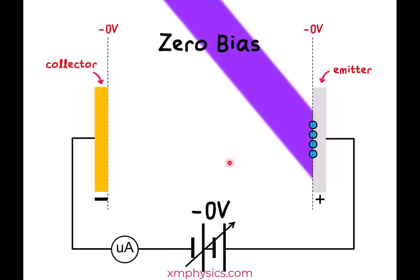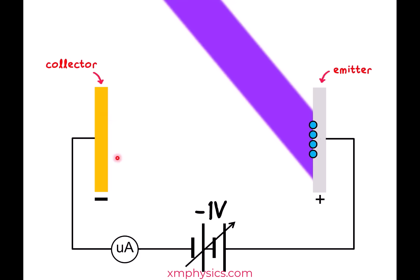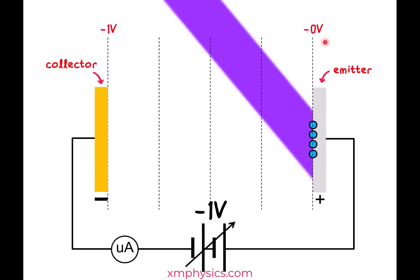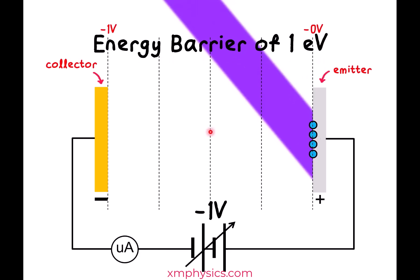Let's go back to the photoelectric effect. At zero bias, the photoelectrons are emitted with a range of initial KE — for example, just under 1 eV, just under 2 eV, just under 3 eV, and just under 4 eV. If we apply a negative potential on the collector, the photoelectrons experience a repulsive electric force. Making the emitter the reference at zero volts, the collector is at negative one volt — we have set up an electric potential energy (EPE) barrier of one electron volt. Work done is Q times the potential difference, so a photoelectron must gain one electron volt of EPE to travel from the emitter to the collector.